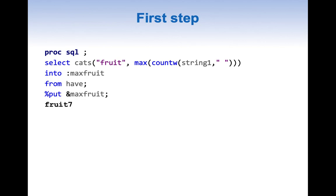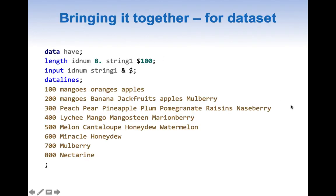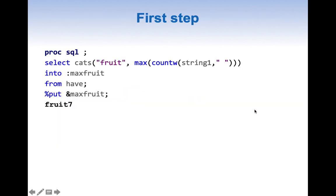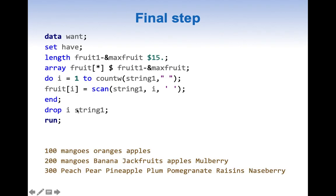The first step in this process is to create a macro variable. This macro variable is based on the MAX of COUNTW on string1. In this case the max words are 7, for idnum 300. We are also concatenating the result with the word 'fruit', so our macro variable value becomes 'fruit7'.